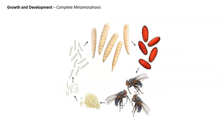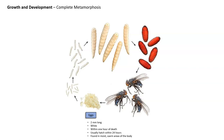Once the flies deposit the eggs, they develop through complete metamorphosis. The eggs are roughly two millimeters long and white, and are laid within an hour of death by the adults. They usually hatch within 24 hours of being laid, and they are found in all of those moist, warm areas of the body like the eyes, mouth, nose, and any wounds.